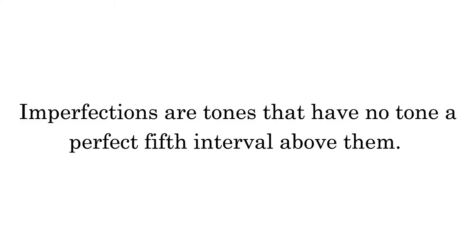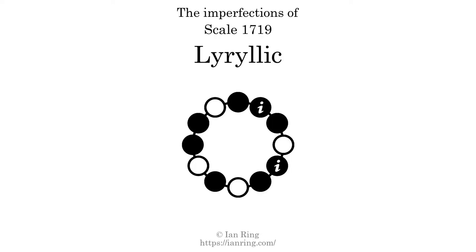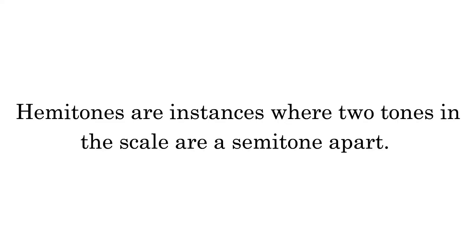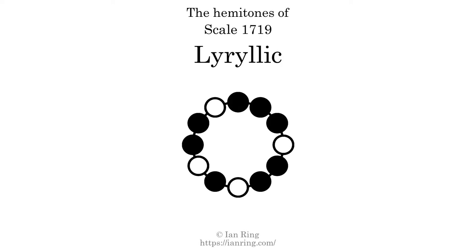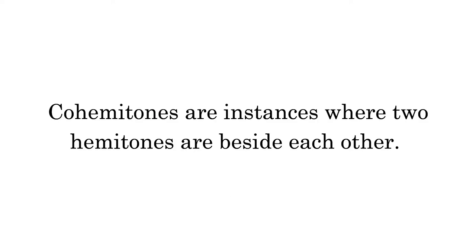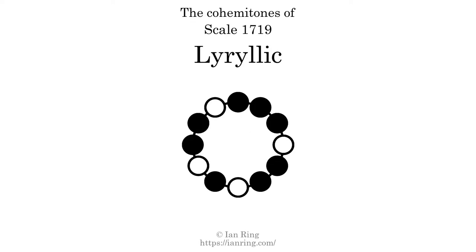Imperfections are tones that have no tone a perfect fifth interval above them. This scale has two imperfections. Hammertones are instances where two tones in the scale are a semitone apart. This scale has four hammertones. Co-hammertones are instances where two hammertones are beside each other. This scale has one co-hammertone.